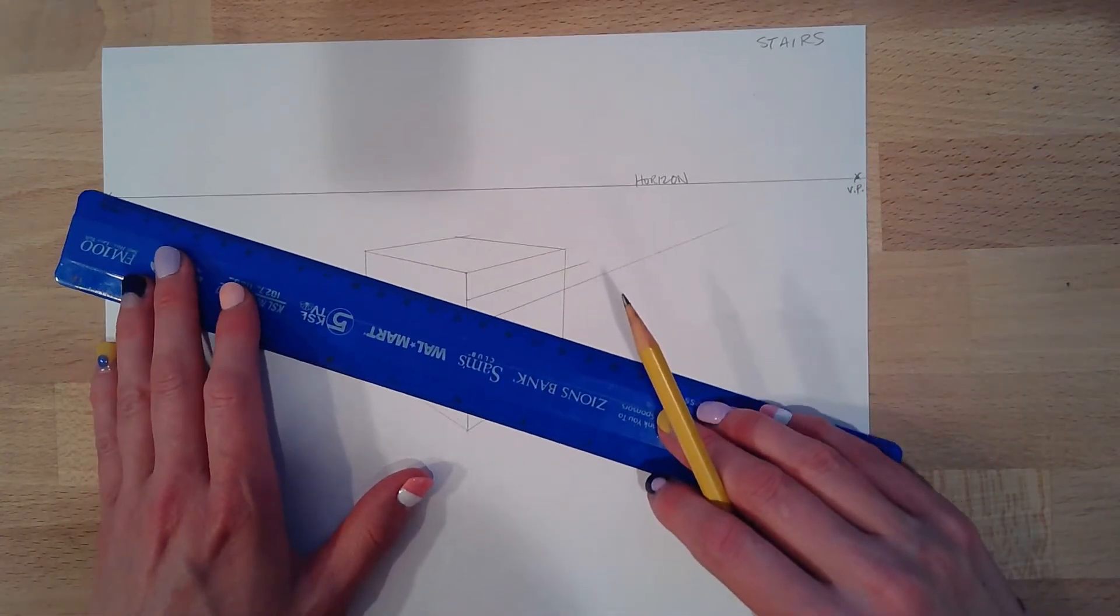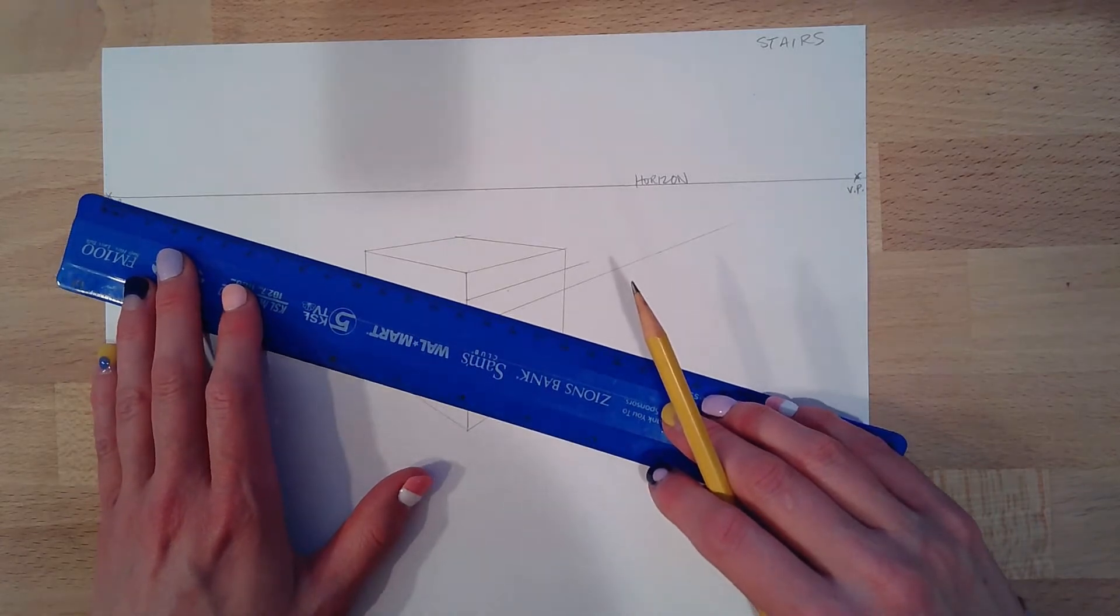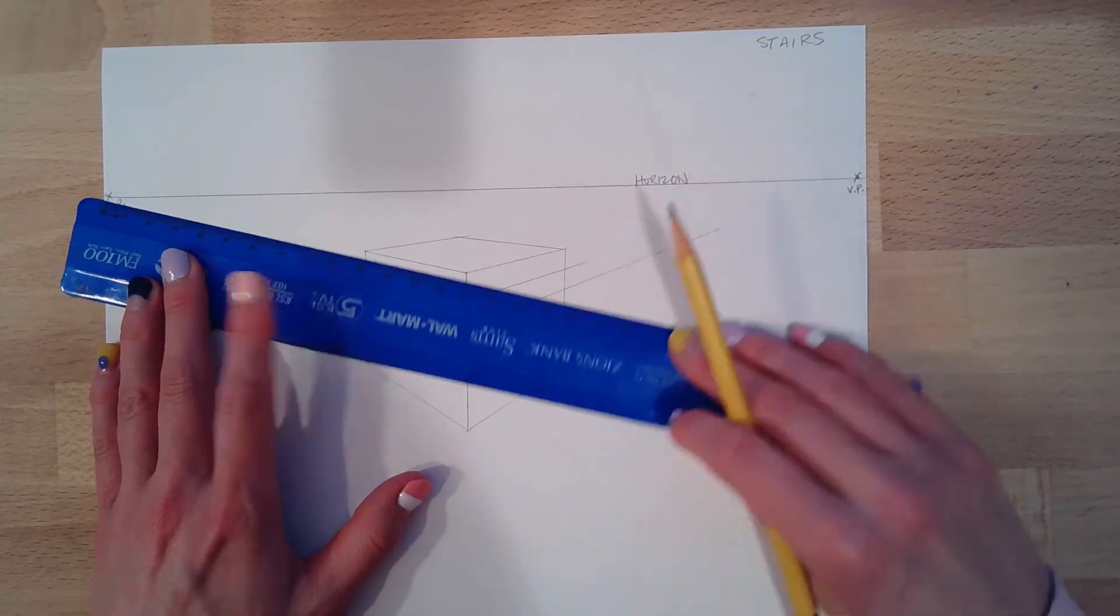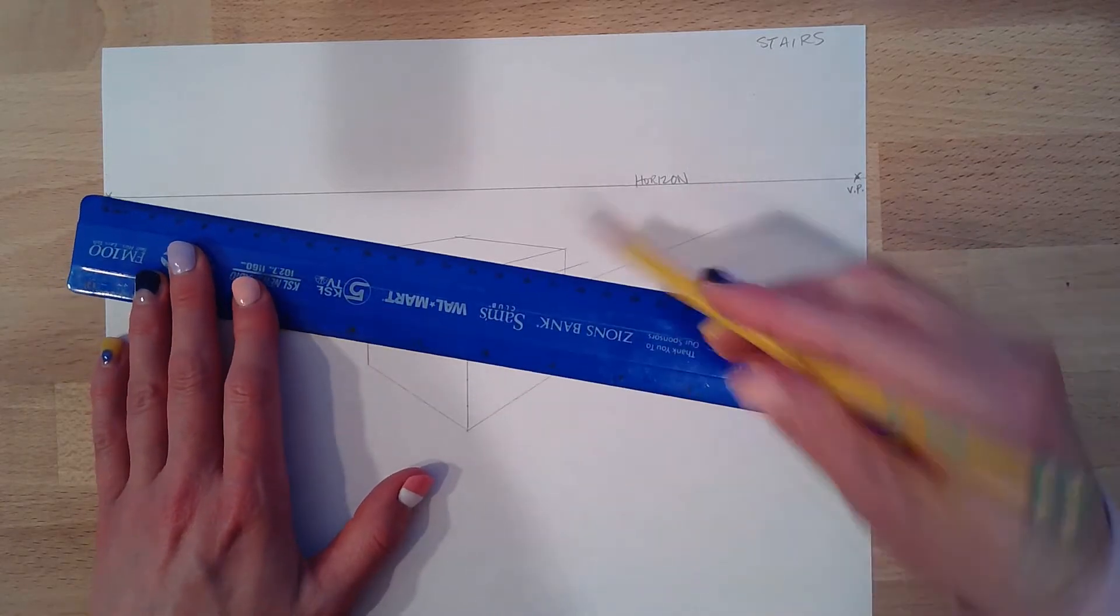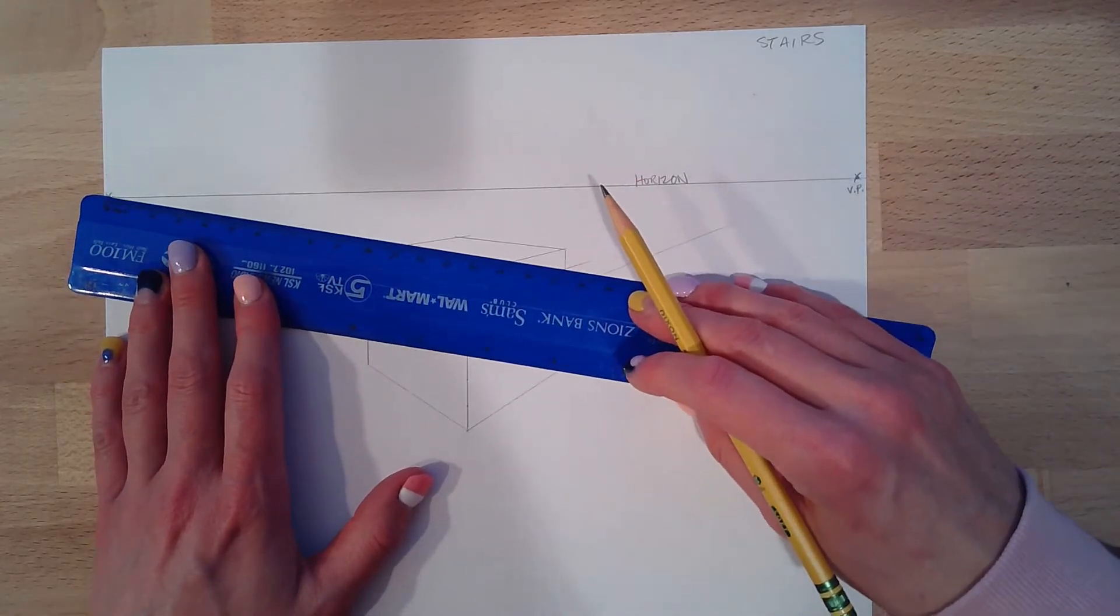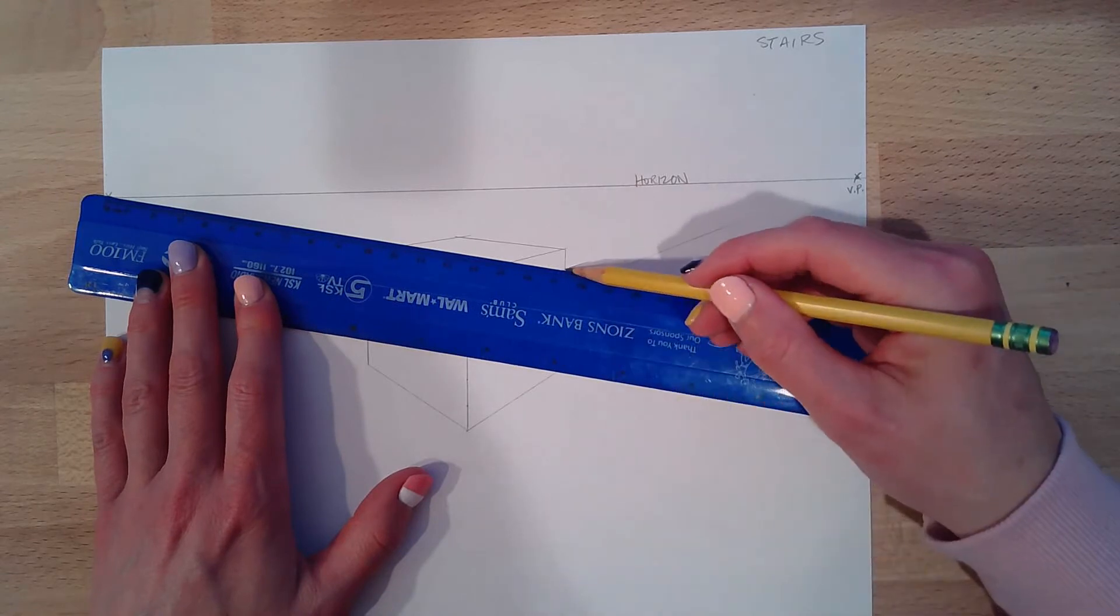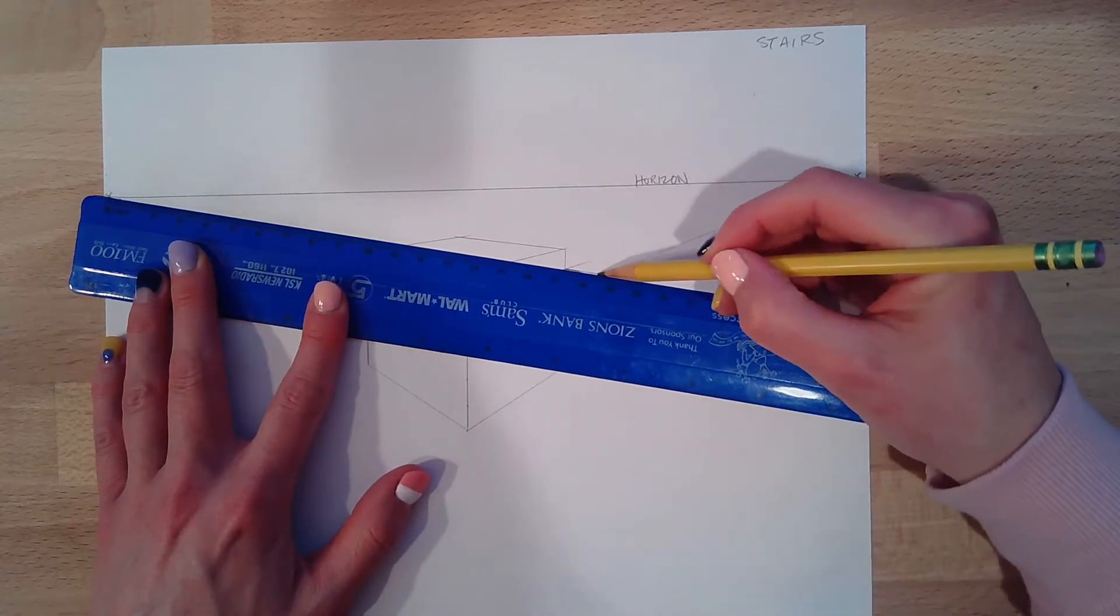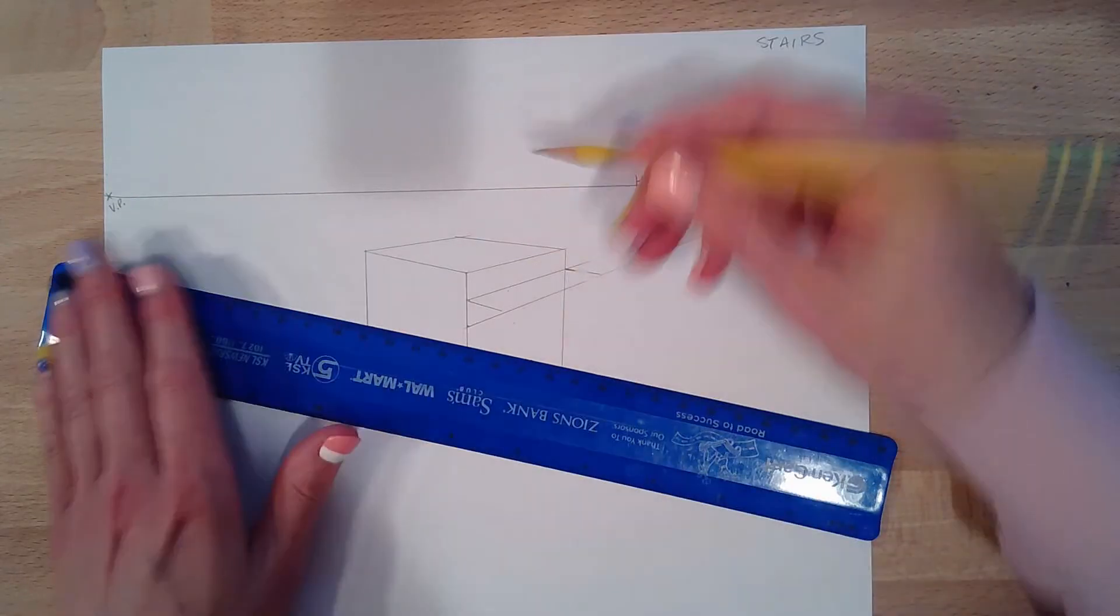And I'm going to draw the edge. So this is my top stair at the front and the bottom. This will make sense in a second. Then I'm going to take my opposite vanishing point. I'm going to go from this top point. Okay, I messed up a little bit so we're going to fix that line.